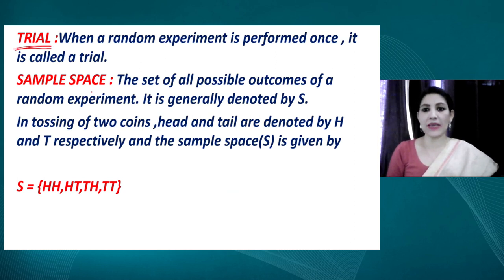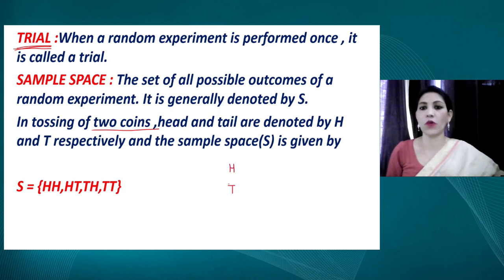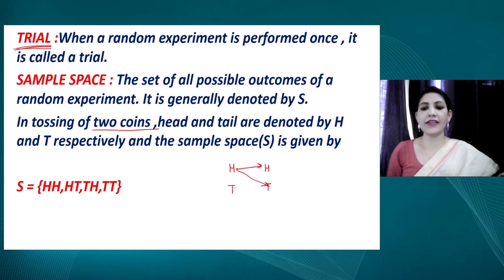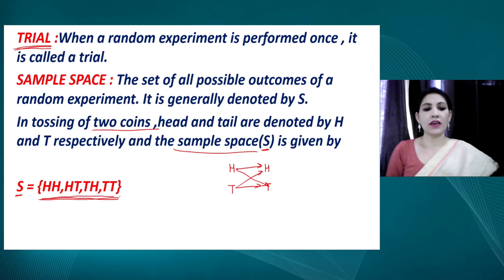What do we mean by sample space? If we toss two coins, the possible outcomes are: head-head, head-tail, tail-head, and tail-tail. There are four possible outcomes. We denote the sample space by S, which includes all four of these outcomes.